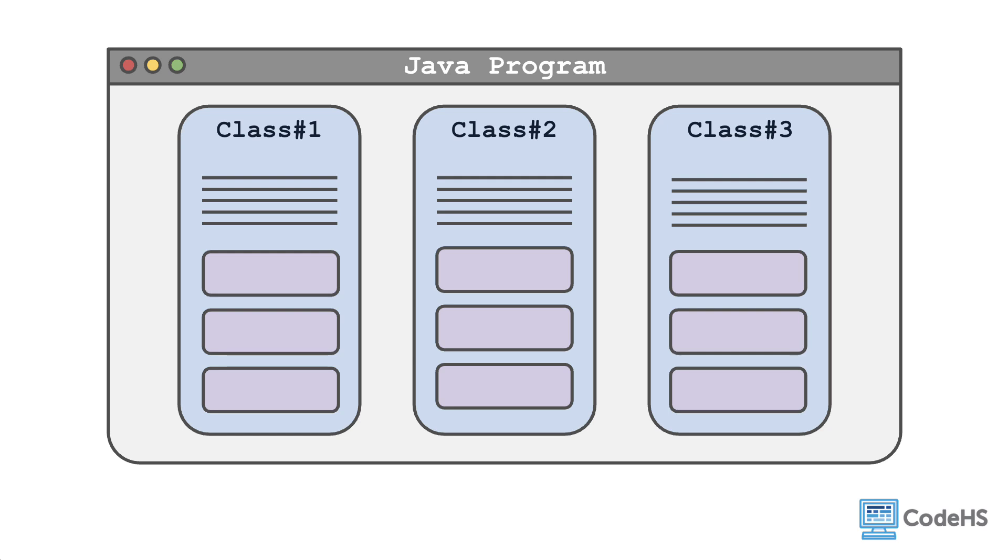As you know, a Java program is composed of one or more classes. Within each class, you have the attributes and methods.